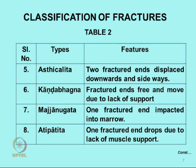The fifth kind is called Asthichalita — two fractured ends which are displaced downwards and sideways, depending on the force which produced the fracture and the pull of muscles attached to those bone ends. Then there is Khanda Bhagna, where the two fractured ends are almost free-floating because there are not too many muscles attached. Then we have Majanugatha — a fracture where one end is pushed into or impacted into the bone marrow of the other fragment: an impacted fracture.